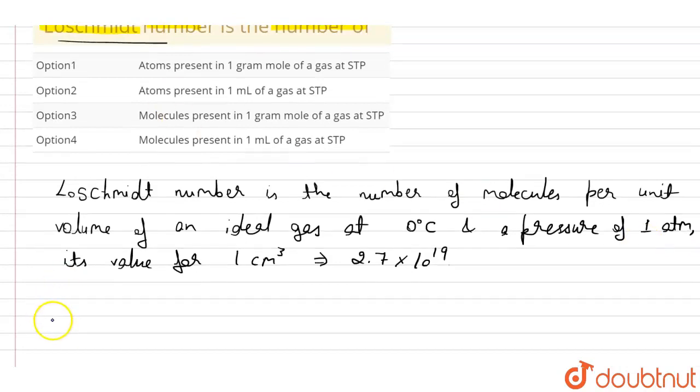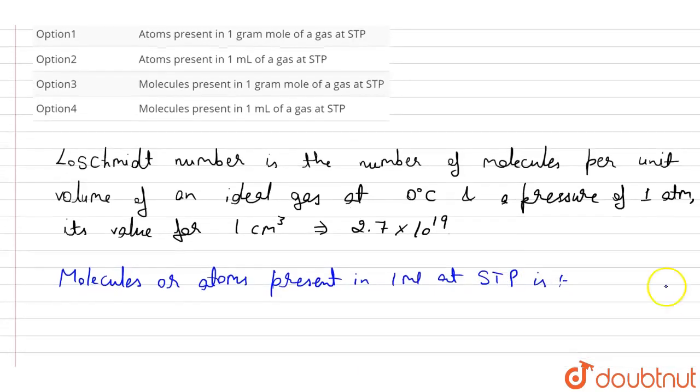Now, the molecules or atoms that are present in one ml at STP, that is standard temperature and pressure, is equal to 6.022 into 10 to the power 23 upon 22.4 into 1000.